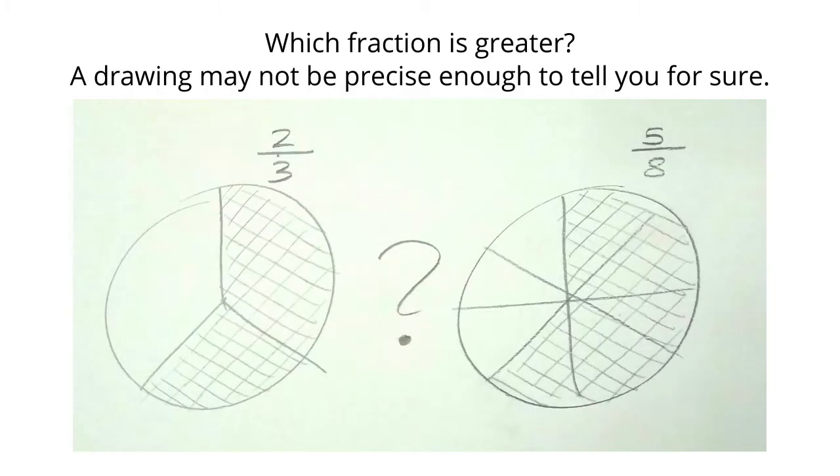Often, we can solve problems by drawing a picture. But for this one, it might not work, because two-thirds and five-eighths are similar amounts.